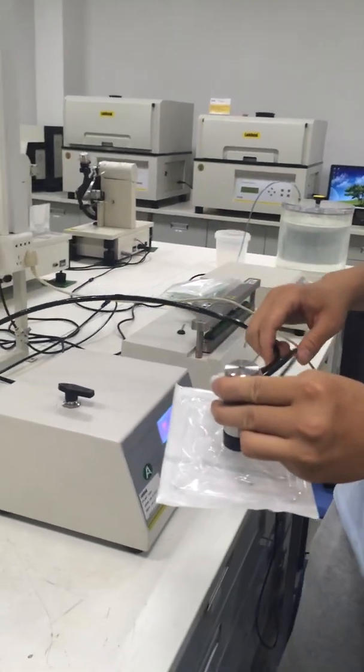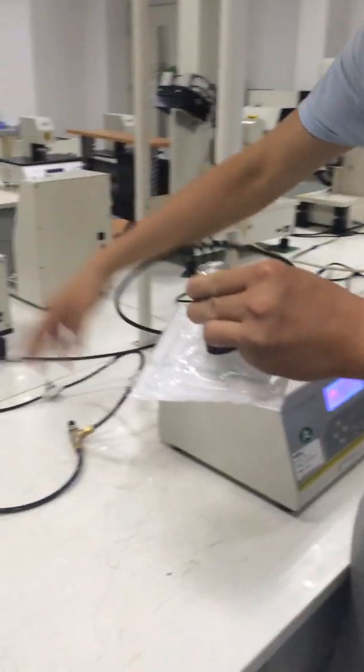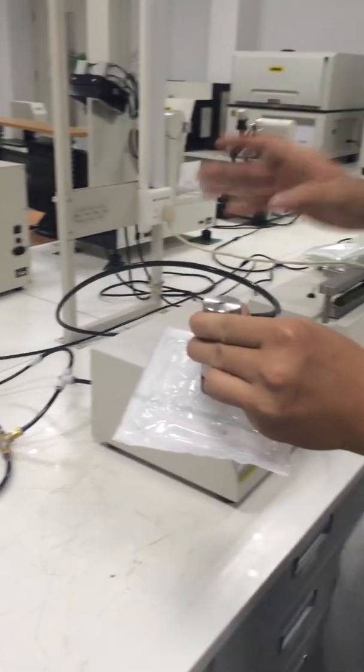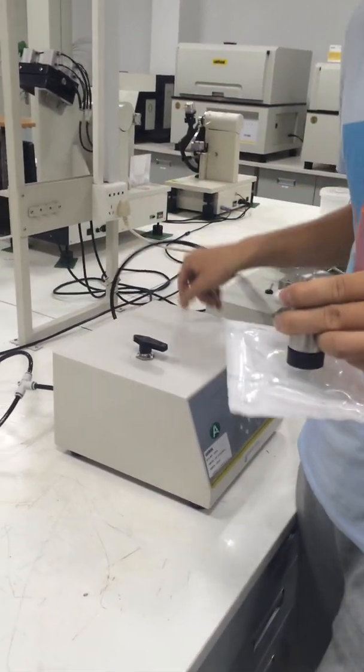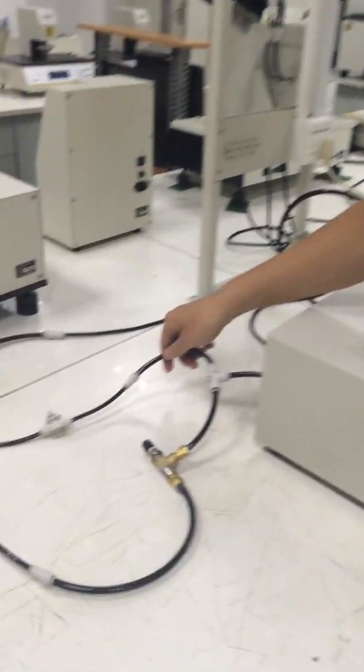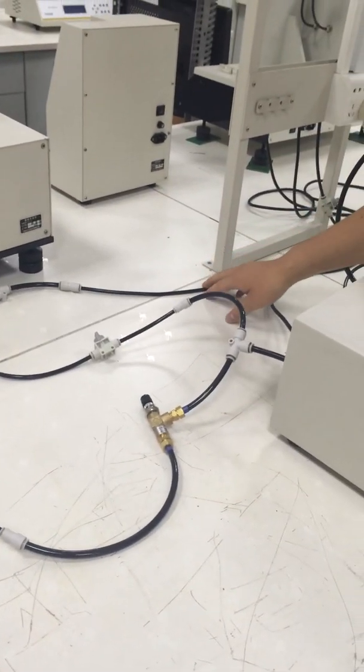Okay, now I will introduce you how to use these fixtures to let the bubble test perform normally. Basically, we added two pipes for the gas inlet.